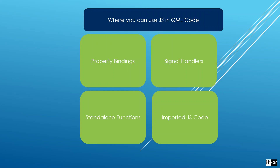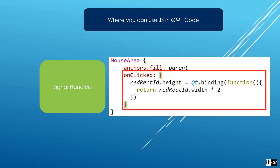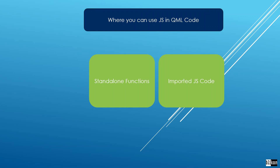Now that you know more about the JavaScript environment in QML, where can you type JavaScript code in your QML file? You can do that in property bindings, signal handlers, standalone JavaScript functions, and imported JavaScript code. In property bindings we've already used it — for example, height equals width multiplied by a given number. In signal handlers, inside a MouseArea's onClicked method. The topics of this chapter are standalone functions and imported JavaScript code. In the next few lectures we'll open Qt Creator and start playing with these.